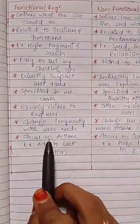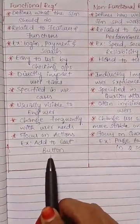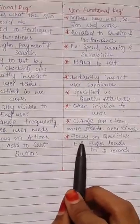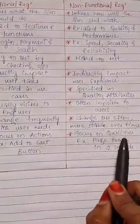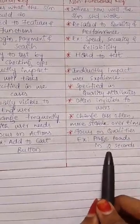In functional requirements, focus on actions. For example, add to cart button. This is some action. And in non-functional requirements, focus on qualities. That is, page loading in 2 seconds. That is quality.